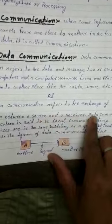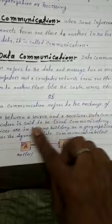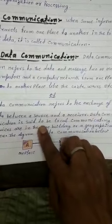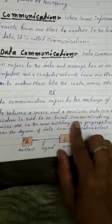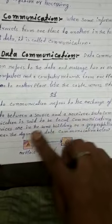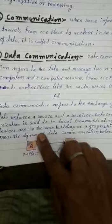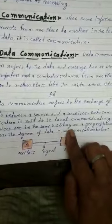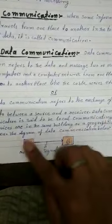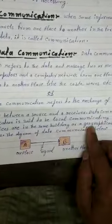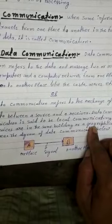From sender to receiver. Data communication is said to involve locally connected devices in the same building or geographical area.